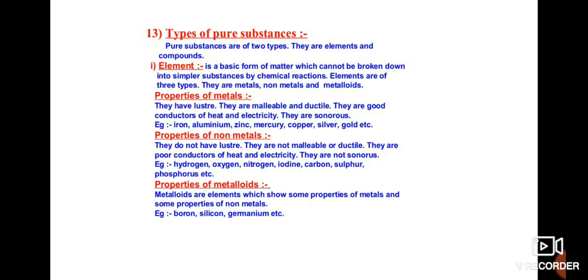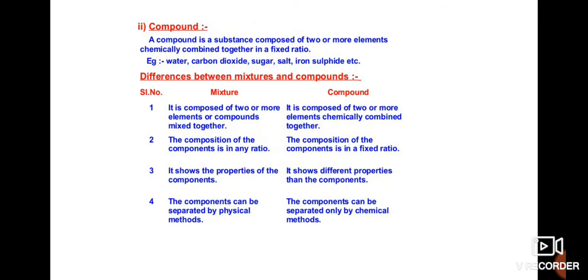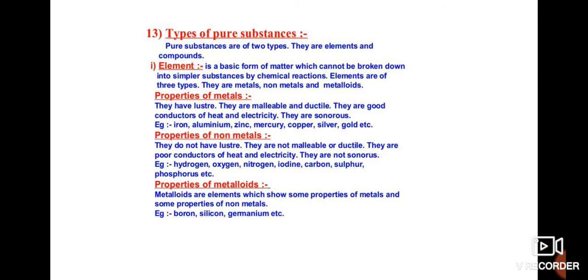To start with this portion: matter, as we have studied in the first chapter, is anything that has got some mass and occupies some space. Based upon matter's basic ingredient, we are dividing matter based upon chemical properties into pure substances and mixtures.